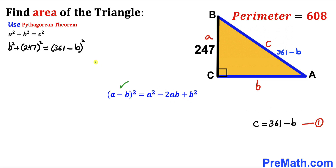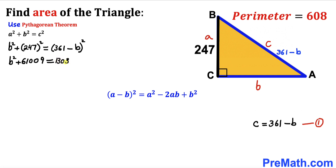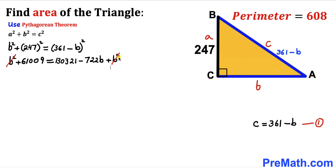Let's recall the identity: (a minus b) squared equals a squared minus 2ab plus b squared. Applying this to the right-hand side, the left side gives b squared plus 61,009, and the right side expands to 130,321 minus 722 times b plus b squared.